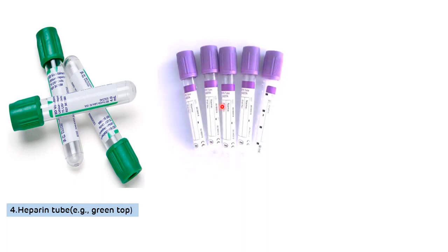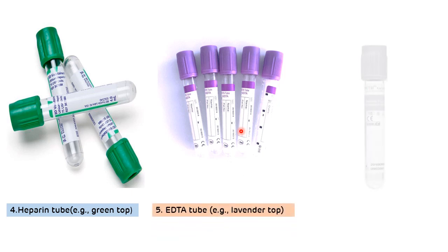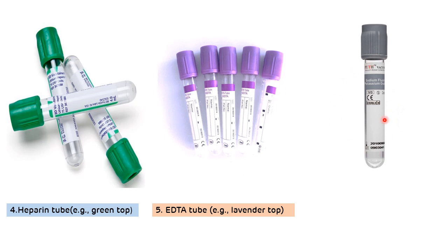The fifth tube in the order is the EDTA tube. EDTA carryover causes more problems than any other additives. EDTA elevates sodium and potassium levels, and it can dilute and reduce calcium and iron levels. The last tube in the draw is the sodium fluoride tube. This sodium fluoride tube again interferes with sodium and potassium levels.